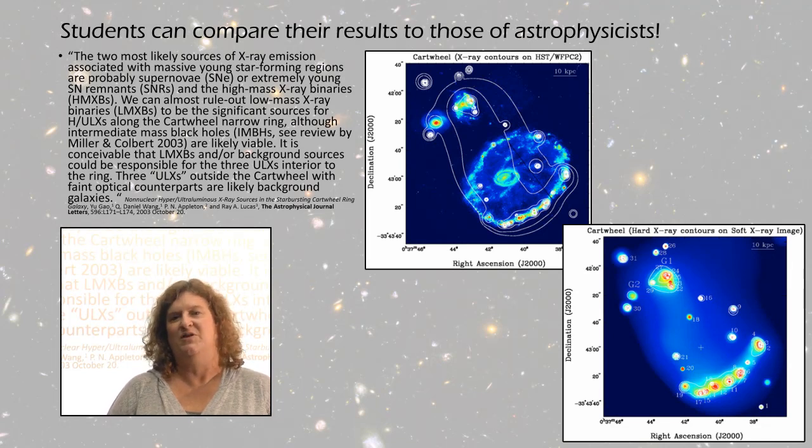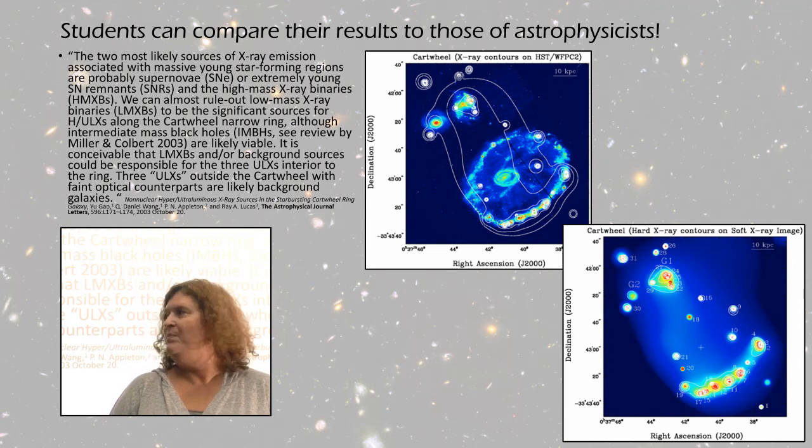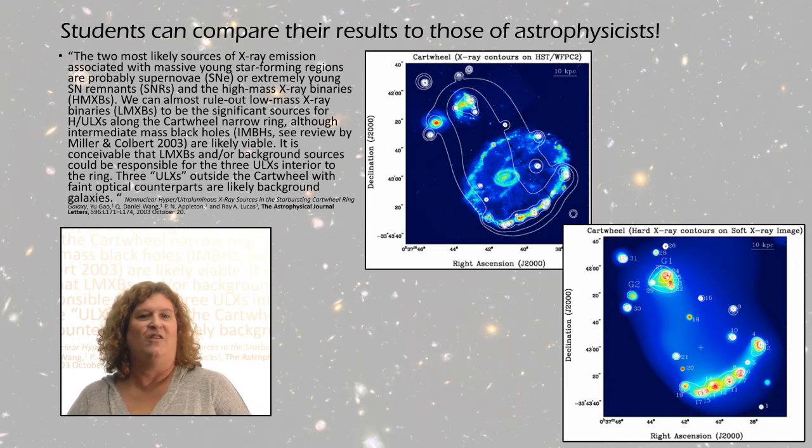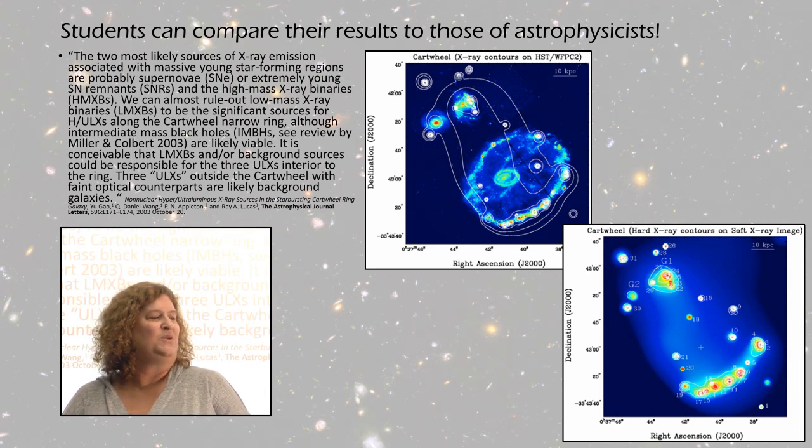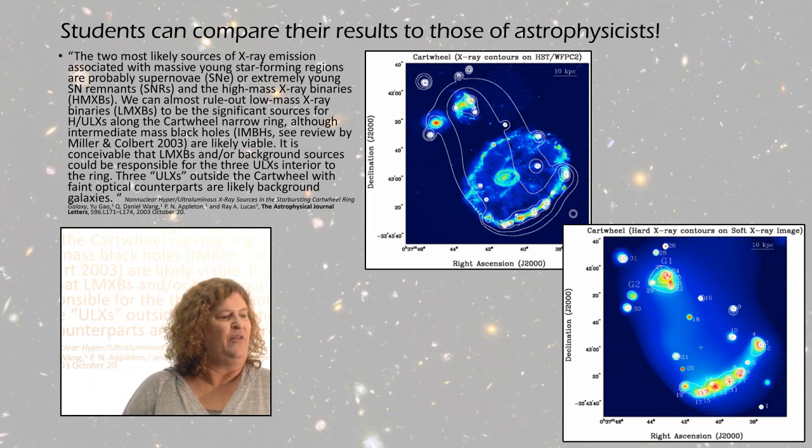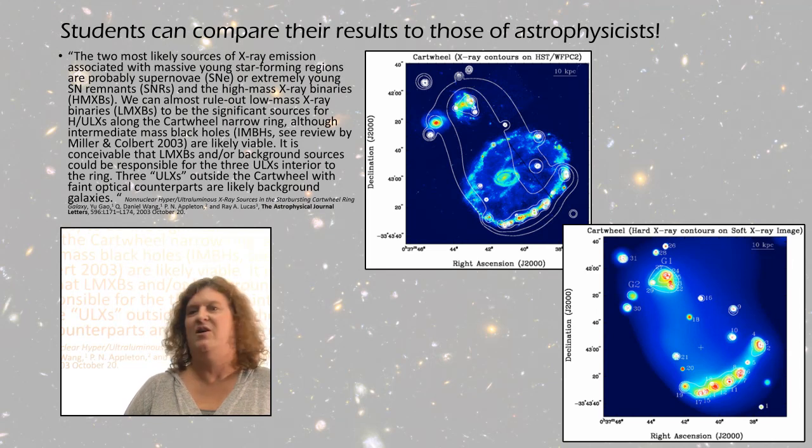But the really cool thing for my students was, after they finish an activity like the Cartwheel Galaxy or looking at Type 1a and Type 2 supernova remnants, is to then look at the scientific papers. When they start to read them, they're like, 'I can't believe I just came to the exact same answer that the astrophysicists came to.' They're using the same data, not fake data. That's really exciting to them. This slide is a quote from a paper published in the Astrophysical Journal Letters about the Cartwheel Galaxy.